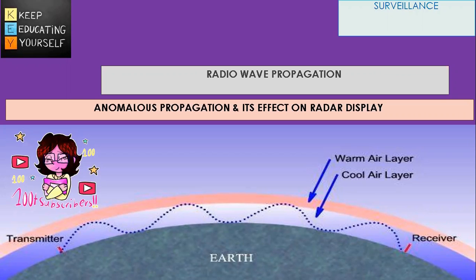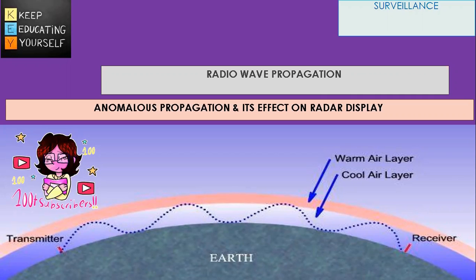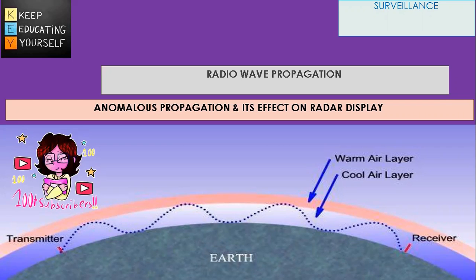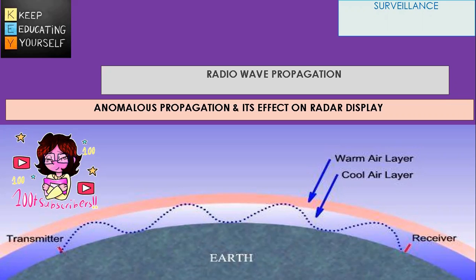Effect on radar display: The visible effects of anomalous propagation on the radar display are that targets within the visible range of the radar set, which cannot usually be seen due to their being below the vertical polar diagram, can be clearly seen at the correct bearing and distance. However, targets which should not be visible due to being beyond the normal range of coverage can be seen at the correct bearings but at false distances.